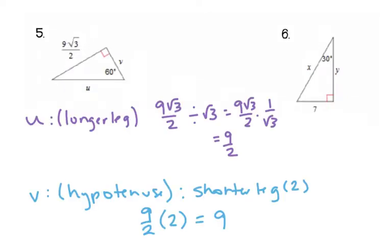Here's the answer for number 5. U is equal to 9 halves, and V is equal to 9.